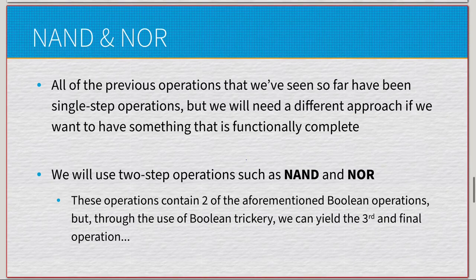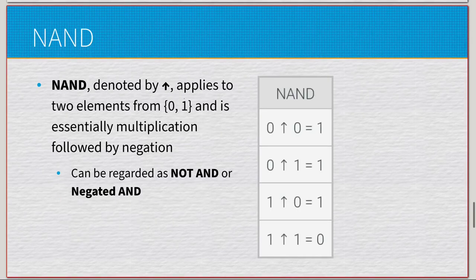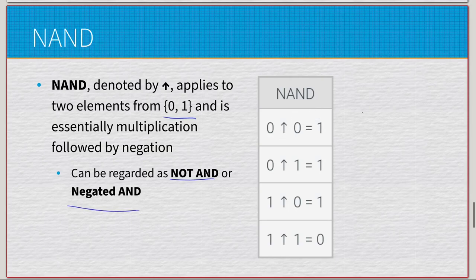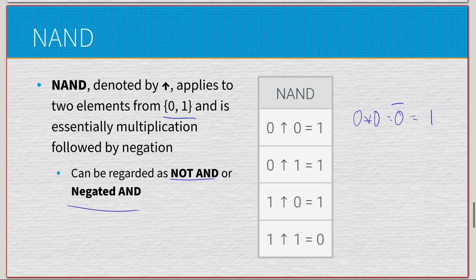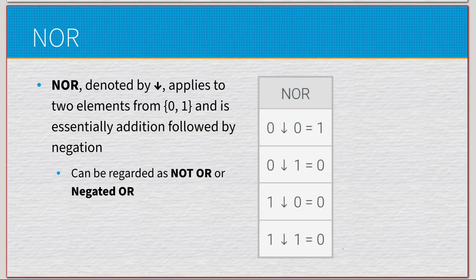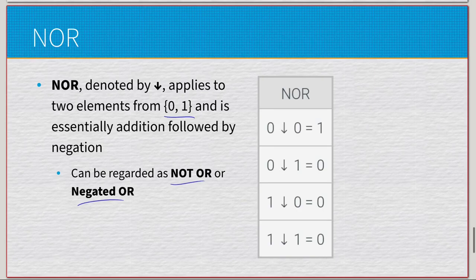NAND is denoted by an up arrow, taking two elements from {0,1}. It is essentially multiplication followed by negation — also called NOT-AND or negated-AND. So: 0 NAND 0 = NOT(0×0) = 1; 0 NAND 1 = NOT(0×1) = 1; 1 NAND 0 = NOT(1×0) = 1; 1 NAND 1 = NOT(1×1) = 0. NOR is denoted by a down arrow — addition followed by negation. So: 0 NOR 0 = 1; 0 NOR 1 = 0; 1 NOR 0 = 0; 1 NOR 1 = 0.